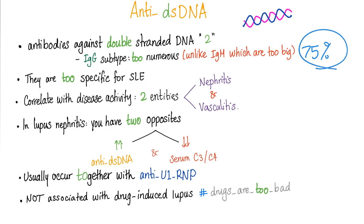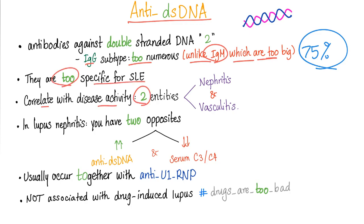IgG represents 75% of antibodies. Contrast that with IgM — they are too big. But IgG: too numerous. Anti-double-stranded DNA: too specific for lupus. They correlate with disease activity regarding two entities: nephritis and vasculitis.